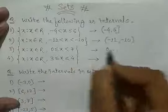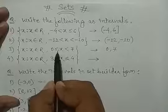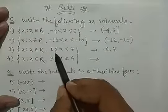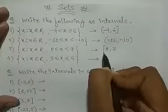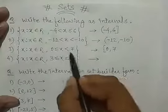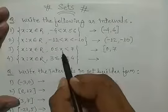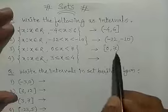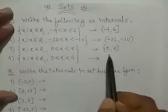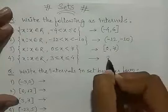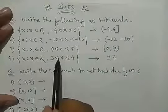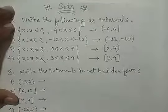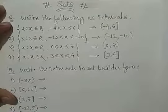x is greater than or equal to 0 and less than 7. यहाँ equal का sign लगा हुआ है, means x की value 0 भी हो सकती है — 0 include है, इसलिए square bracket. और 7 के लिए सिर्फ less than का sign है, equal नहीं — मतलब 7 include नहीं है, इसलिए open bracket. Answer: [0, 7). फिर next: 3 and 4 — यहाँ less than or equal to का sign दोनों तरफ है — square bracket दोनों तरफ. मतलब 3 और 4 दोनों condition में include हैं. Answer: [3, 4].